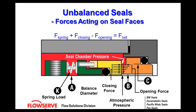For an unbalanced seal, the equation is: closing force of the springs plus closing force of all other factors minus the opening force equals the net force. Looking at the seal itself, where the springs are located at item K — if you draw a line straight through that spring, you'll notice the springs are directly in line with the interaction of the two seal faces. That is indicative of an unbalanced design.